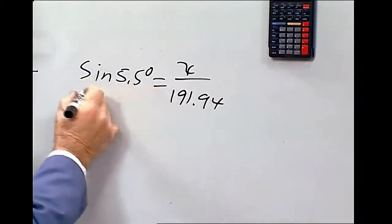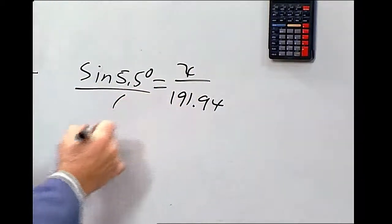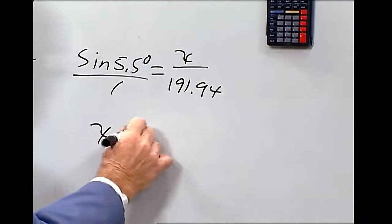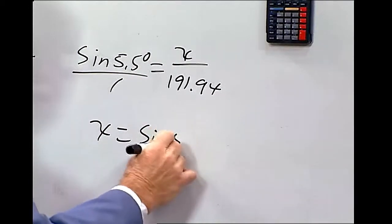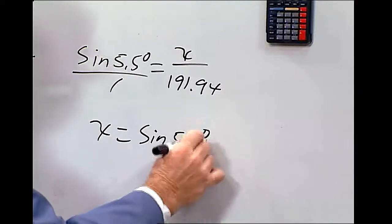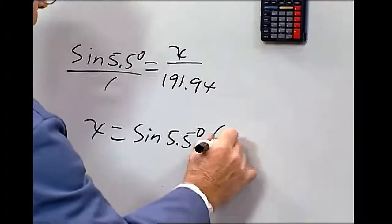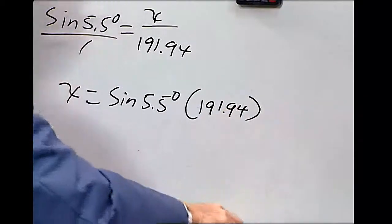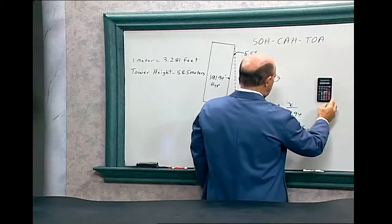Now let's just cross multiply. Isolate the x. x equals sine of 5.5 degrees, and we multiply that by 191.94.